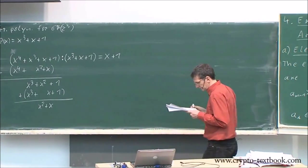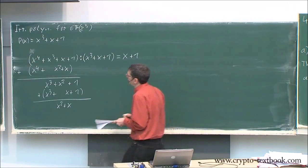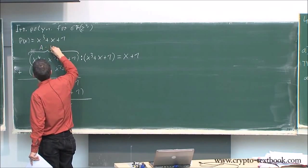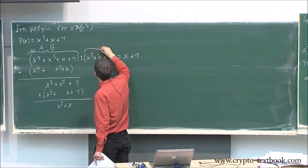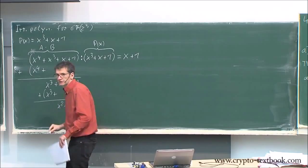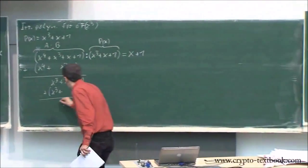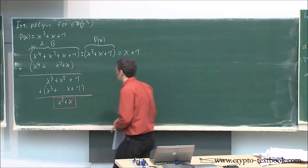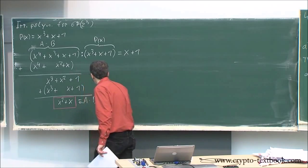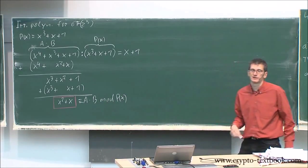We can continue — x cubed is still too big, so we do one more iteration. We add the polynomial x cubed plus x plus 1 again. After adding and canceling, we get the final result. So: a times B divided by P of x gives us the result of our computation.